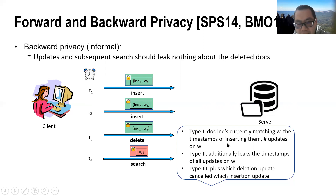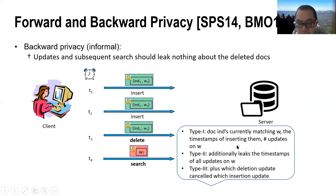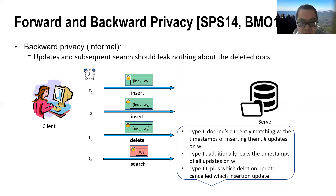Type 1 also leaks the time steps of inserting these documents and the total number of updates on a query. Type 2 backward privacy additionally leaks the time steps of all updates on the queried keyword. For Type 3 backward privacy, it further leaks which deletion cancels which insertion.